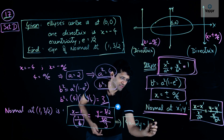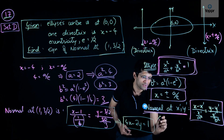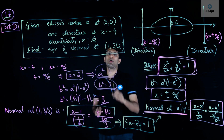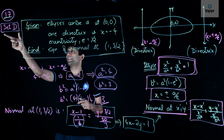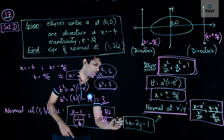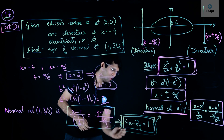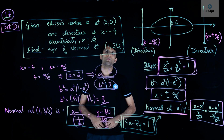Solving and simplifying the equation gives the final answer: 4x − 2y = 1. This is the equation of the normal to the ellipse at the point (1, 3/2), and the answer for set D is option number 2, which is 4x − 2y = 1.